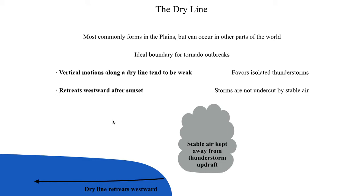As the dry line retreats westward, it allows thunderstorms to continue even after sunset. That means the thunderstorms are able to access those strong low-level jet winds, which are really conducive for producing low-level rotation, which also favors the production of tornadoes. We'll talk more about how to put all that together once we get into some of the later topics of the severe weather unit.